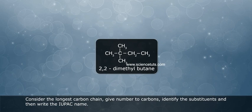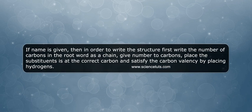Consider the longest carbon chain. Give number to carbons. Identify the substituents and then write the IUPAC name. If name is given, then in order to write the structure first, write the number of carbons in the root word as a chain. Give number to carbons. Place the substituents at the correct carbon and satisfy the carbon valency by placing hydrogens.